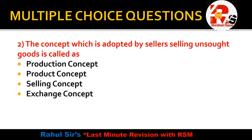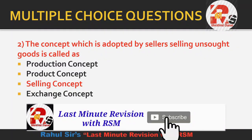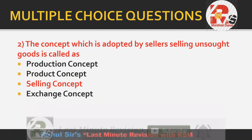Question number 2: The concept which is adopted by sellers selling unsought goods is called as — such products which sellers want to sell but customers don't want to buy are called unsought goods. The best examples are insurance and encyclopedias. The options are production concept, product concept, selling concept, or exchange concept. The correct answer is selling concept — it focuses on unsought goods, meaning products customers don't want to buy on their own, so different selling techniques are needed.